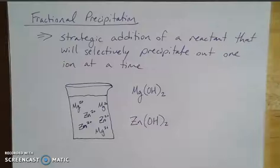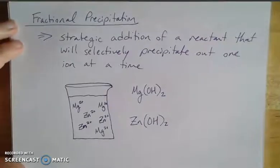That equilibrium can be messed with in different ways, and actually by messing with it, that's one of the ways that we can actually separate out some of these ions, and that's really what fractional precipitation is all about as a technique.